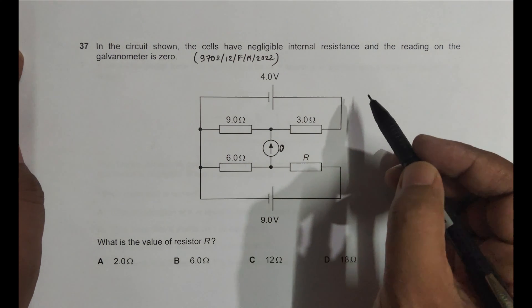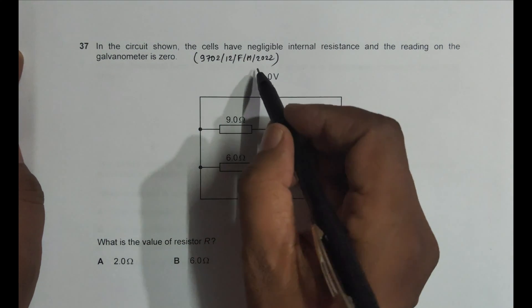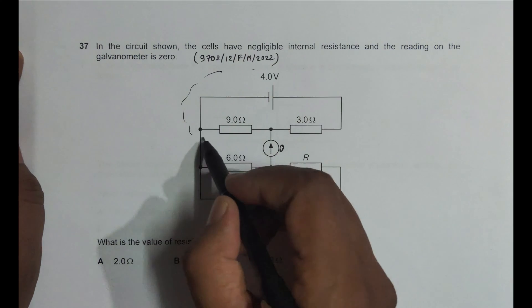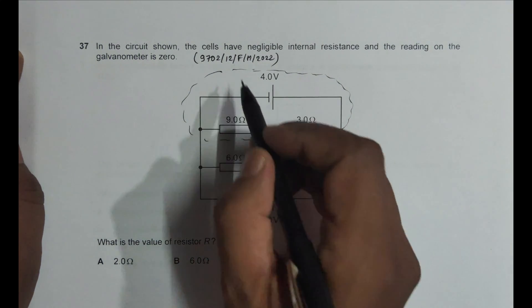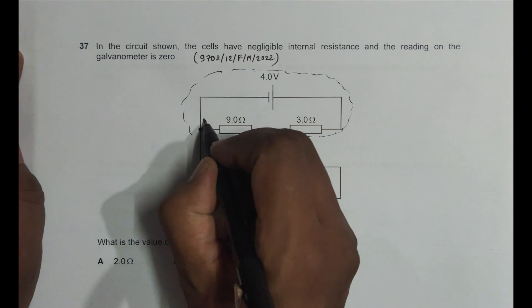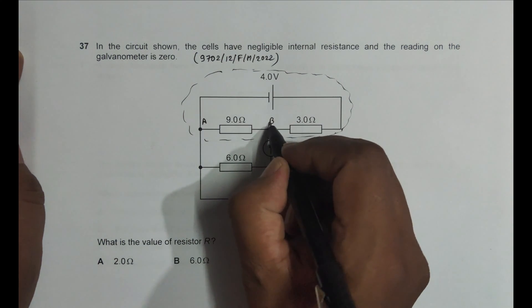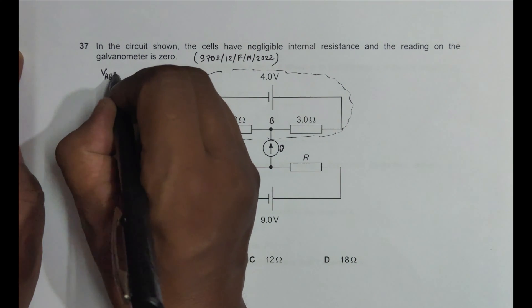So let's do it like this. In this circuit, in the first circuit here, we have the resistors 9 and 3 ohm forming a voltage divider. So if I name this point as A and if I name this point as B, then I must have this.